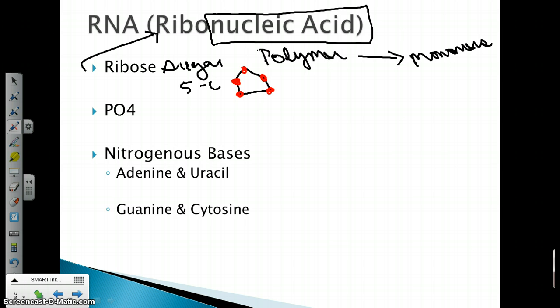Nitrogenous bases are tiny molecules within RNA that hook up together and are made out of the element nitrogen. And the four nitrogenous bases in ribonucleic acid are adenine and uracil, guanine and cytosine.